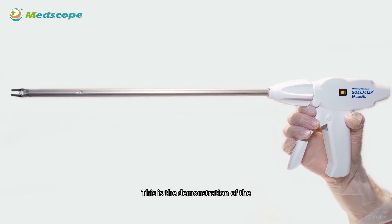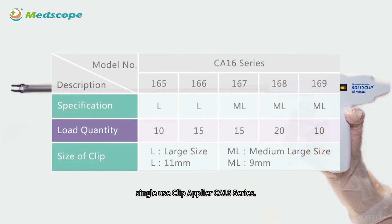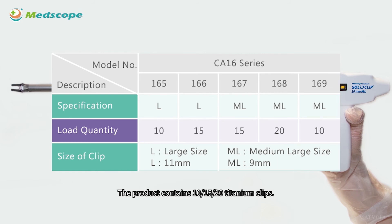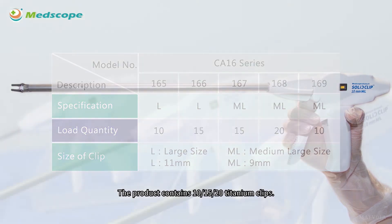This is the demonstration of the single-use Clip Applier CA-16 series. Currently there are two types of clip sizes, ML and L. The product contains 10, 15, and 20 titanium clips.